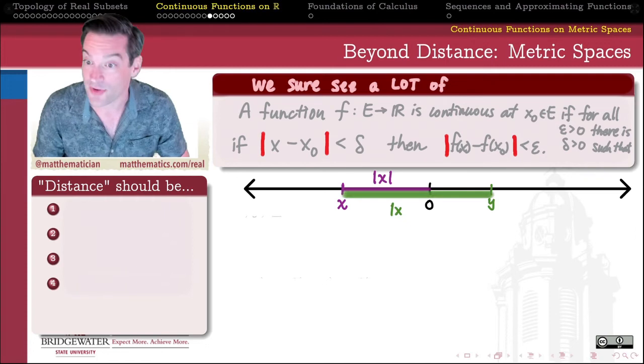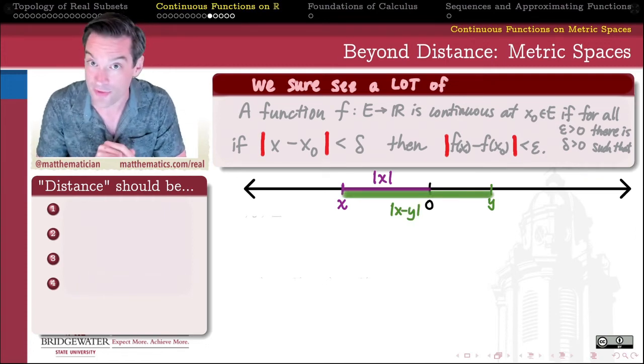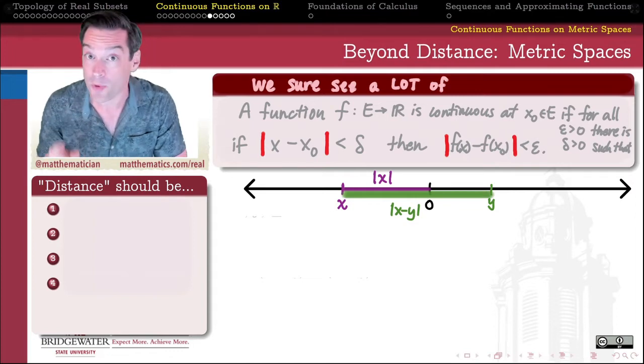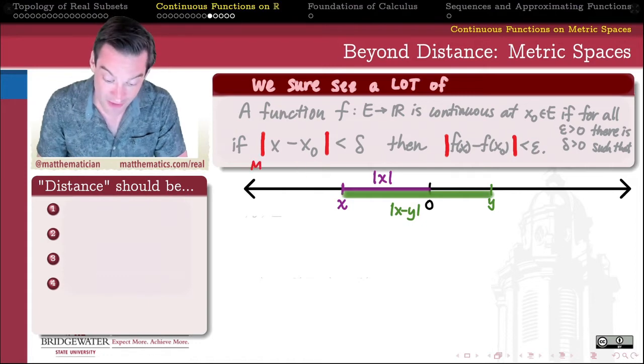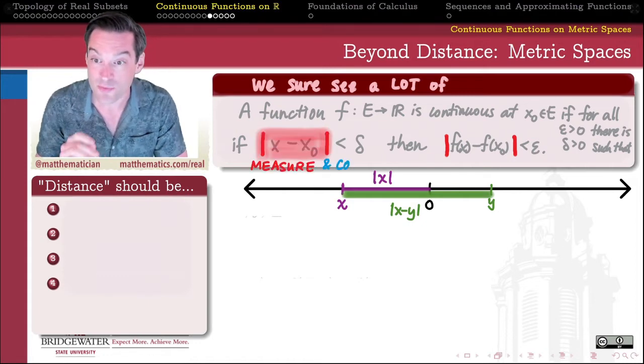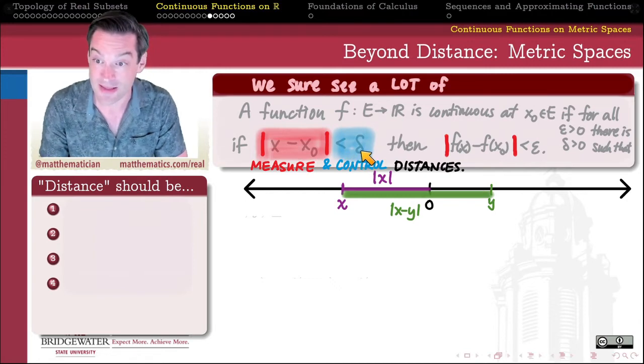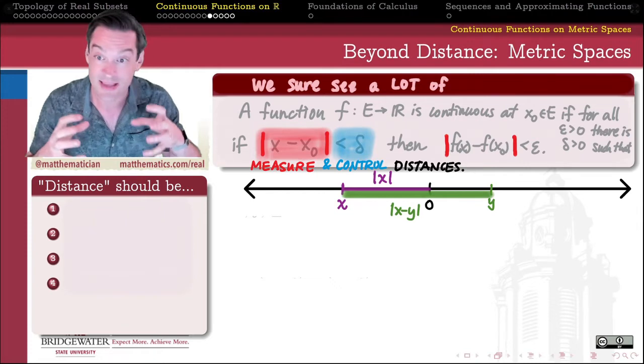Similarly, if I have two real numbers x and y, and I subtract them, and then I take the absolute value of their difference, what I'm measuring is the distance between x and y. And so these absolute values litter our definitions because we are trying to measure a distance between points. And in the case of making it less than some positive quantity, we're also trying to control how large that distance can get.